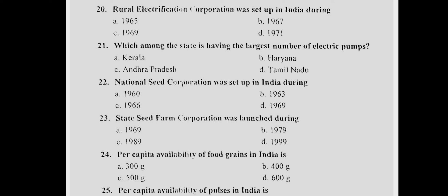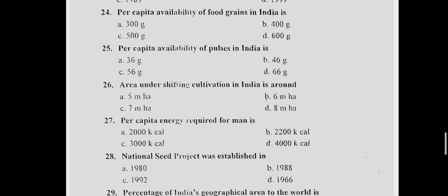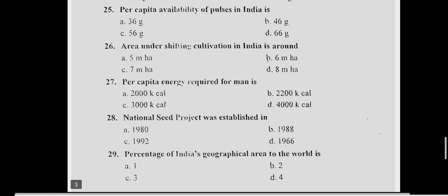Question 24: Per capita availability of food grain in India — Answer C, 500 grams. Question 25: Per capita availability of food pulses in India — Answer A, 36 grams. Question 26: Area under shifting cultivation in India — Answer A, 6 million hectares.